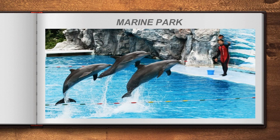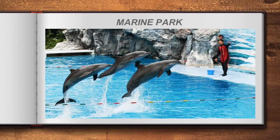Similar to a zoological park, a marine park protects aquatic organisms in a controlled condition under human care. Here, researchers can observe the animals' behavior, movement, and reproduction patterns. This also helps in taxonomical studies.